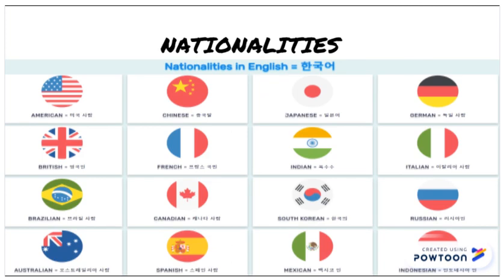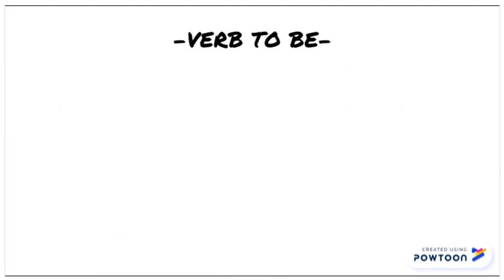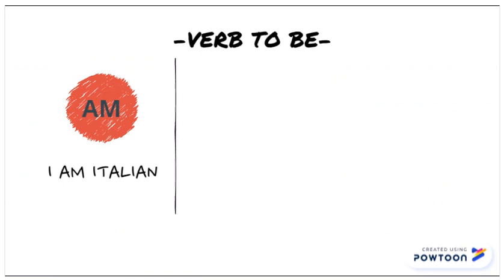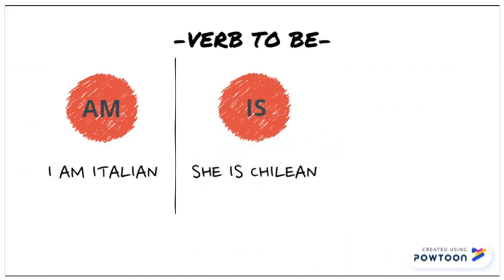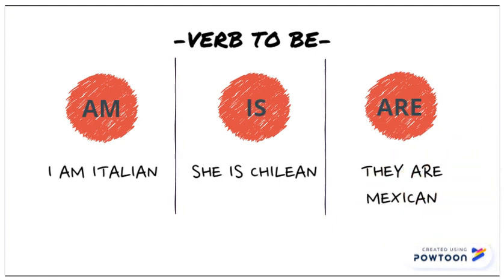Here you have a list of some nationality examples. Please pay attention. Remember that you can check your dictionary to study. Now let's continue with the verb to be. To create sentences we use three forms: am, is, and are in positive examples.